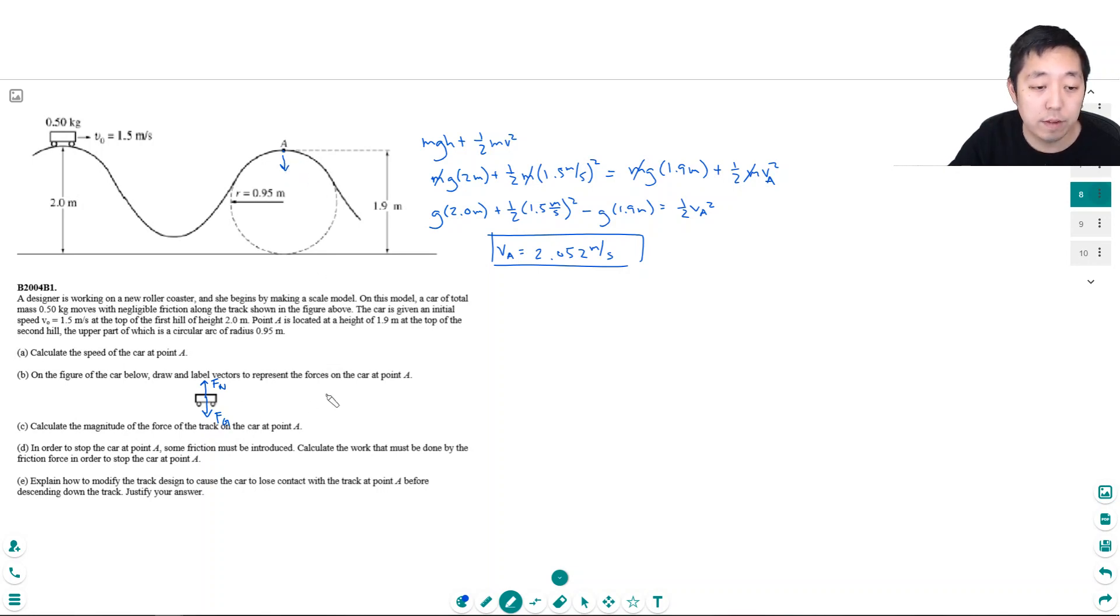So we're going to say the net force is equal to Fg minus the normal force. And we want to find the normal force, the force of the track on the car. That's what Fn is. This is mg minus Fn.